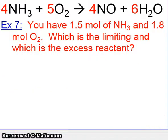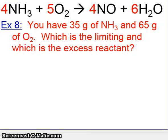In this case, the numbers will be a little more complex, but a similar idea. Here it says you have 35 grams of NH3 and 65 grams of O2, which is the limiting, which is the excess. Same story, let's go ahead and convert both of our reactants, 35 grams of NH3 and 65 grams of O2.